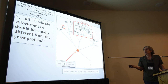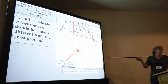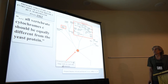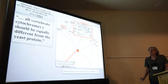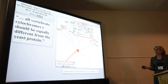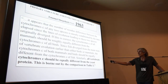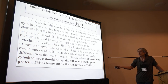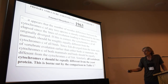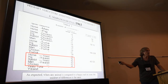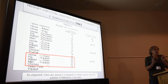In this particular case, you can go back to some of the earliest papers on molecular clocks, all the way back to 1963. Margolis actually predicted this back in 1963. He wrote it up in a paper and said that all vertebrate cytochrome C should be equally different from the yeast protein. This is borne out by the comparison in Table 2. He even gave the data showing a bunch of examples, all equally different. So this is not something suddenly discovered by someone — it's been around for 50 to 55 years and is nothing new.